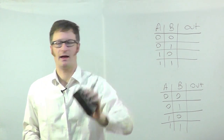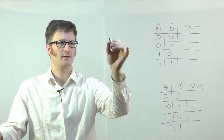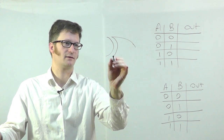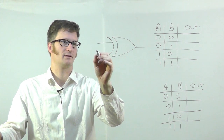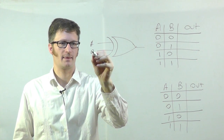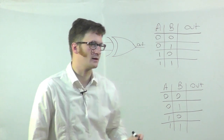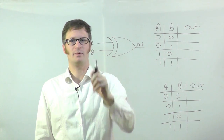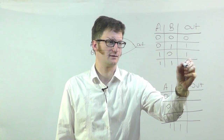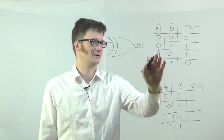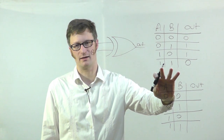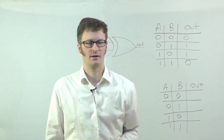Now let's take a look at exclusive OR. Exclusive OR looks similar to an OR gate, except it has a second curved line in the back. Otherwise the shape is the same. The exclusive OR says: if A or B, but only one of them, then make the output high. So the truth table looks like this. If neither A nor B, the output is low. If both A and B are high, that's not exclusive, so it makes it a low as well.